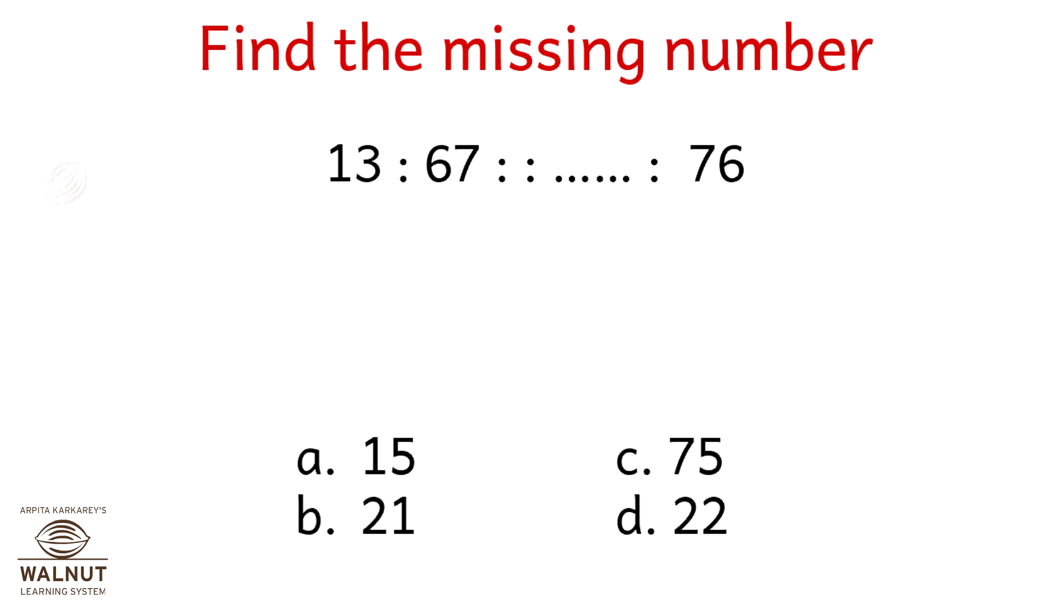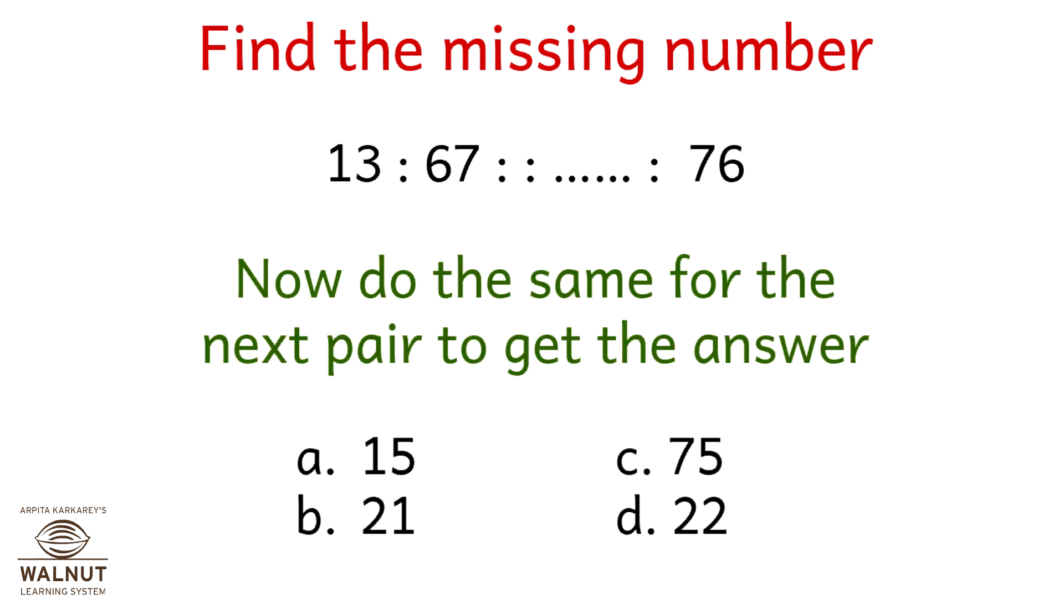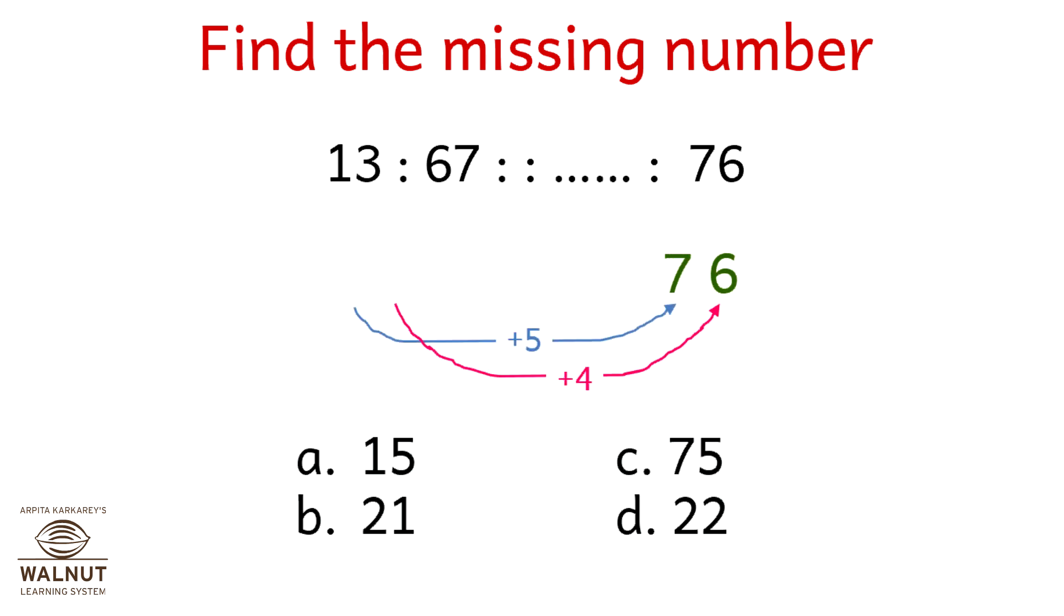13 is to 67 as what is to 76? Let's see. 1 plus 5 is 6, and 3 plus 4 is 7. So now do the same for the next pair to get the answer in the opposite way. What plus 5 is 7 and what plus 4 is 6? 2 plus 5 is 7 and 2 plus 4 is 6. That is the correct answer, option d.